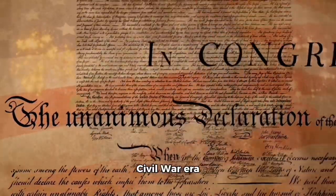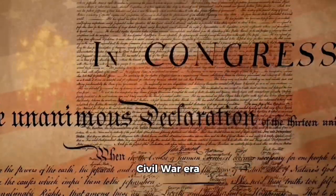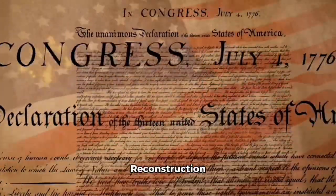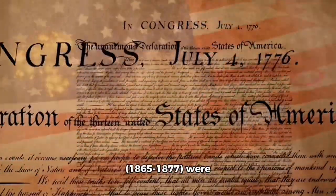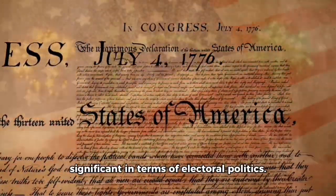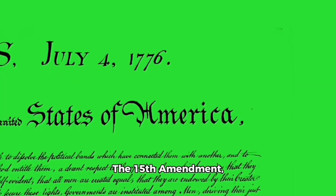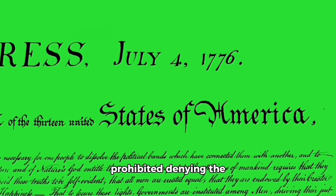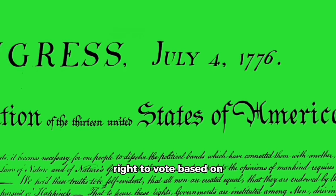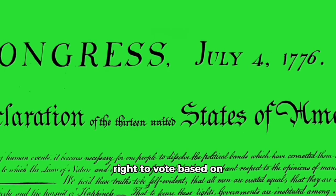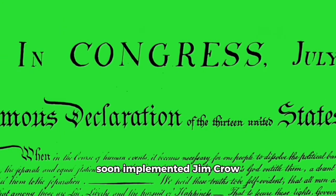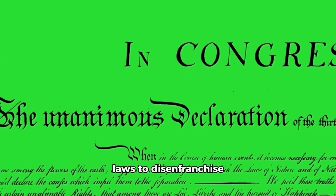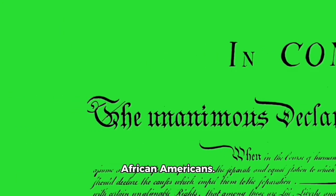Civil War and Reconstruction: the Civil War era (1861–1865) and Reconstruction (1865–1877) were significant turning points in electoral politics. The 15th Amendment, ratified in 1870, prohibited denying the right to vote based on race, but southern states soon implemented Jim Crow laws to disenfranchise African Americans.